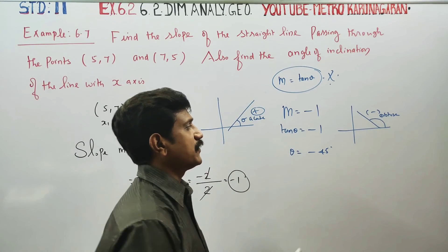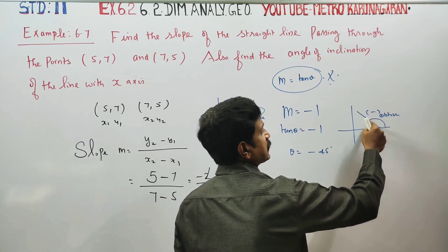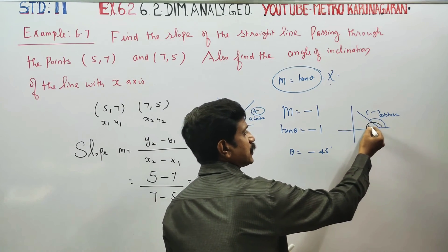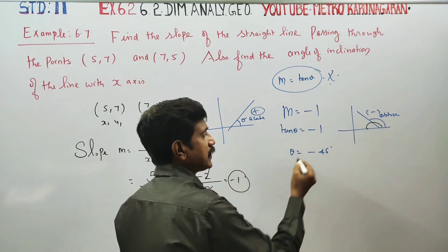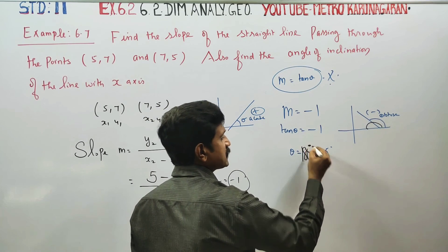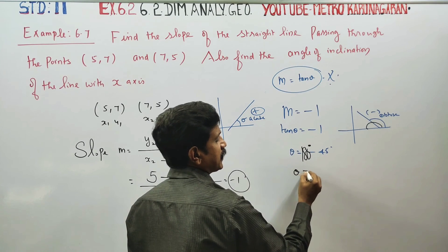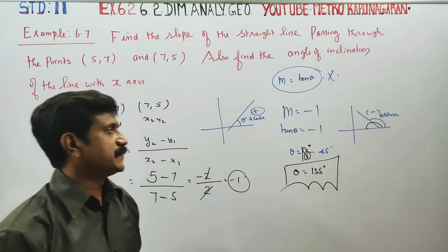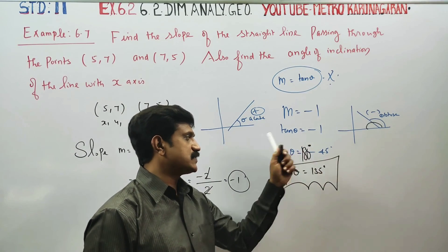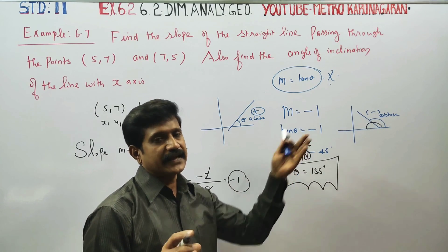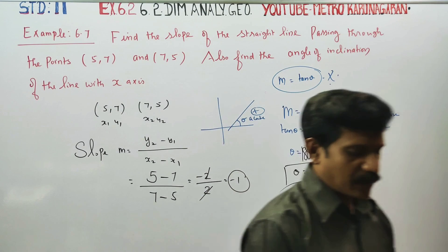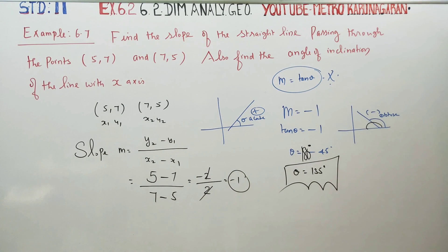Since the slope is negative, the angle is on the negative side, 45 degrees. The total is 180 degrees. The obtuse angle is 180 minus 45, which gives theta equal to 135 degrees. So the angle of inclination is 135 degrees. Tan theta equals minus 1, theta equals 135 degrees.